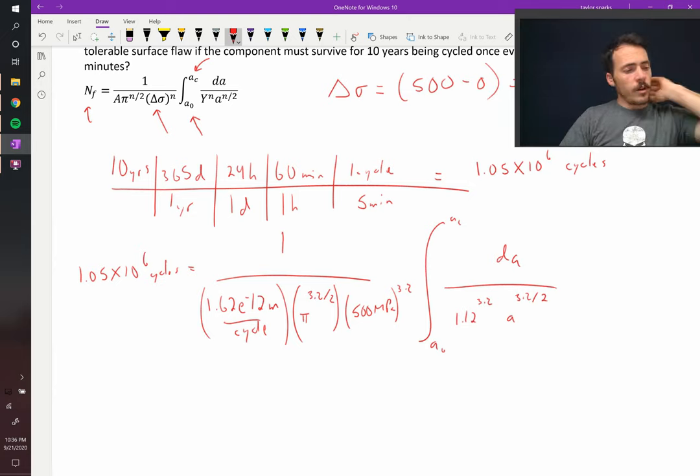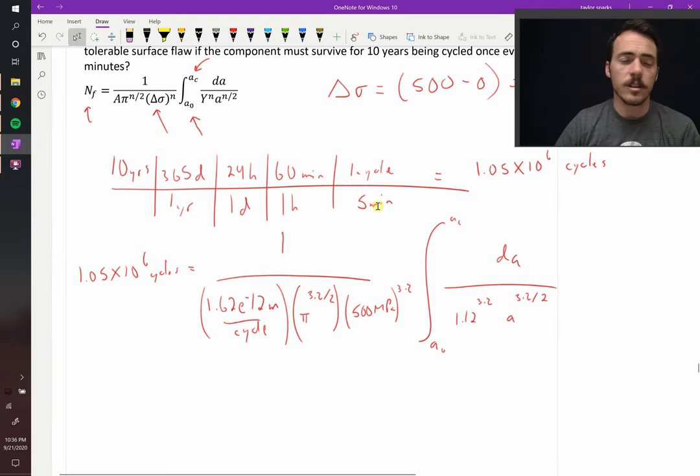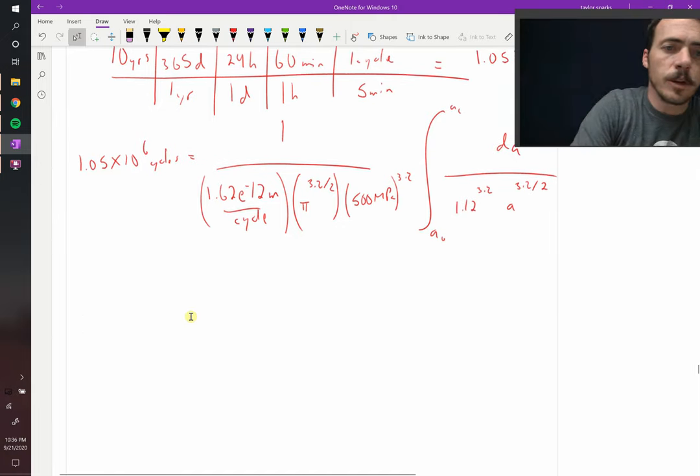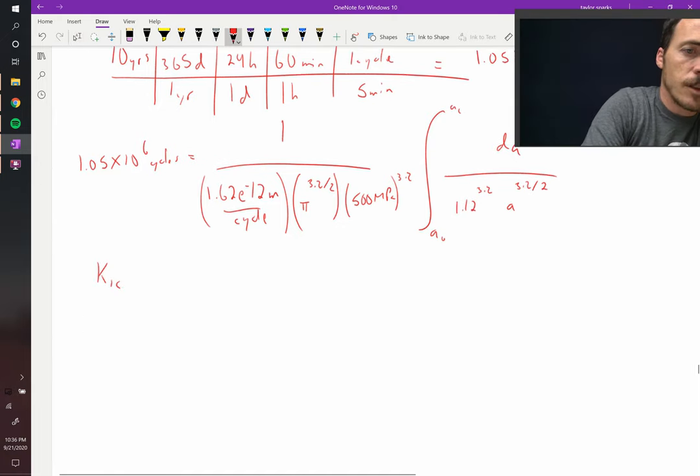So we're not quite ready to finish this yet. We need to know what our largest critical flaw size is, so let's use Griffith Fracture Theory to figure that out. Griffith Fracture Theory says the following: that the fracture toughness K1C is equal to Y times the stress at fracture, so that's going to be our maximum stress that it experiences, multiplied by the square root of pi AC.